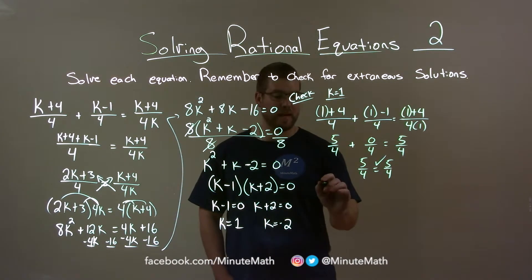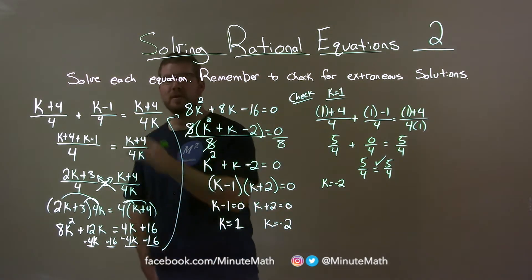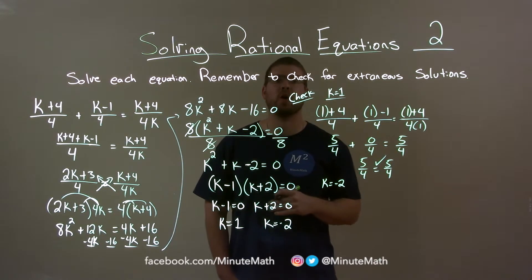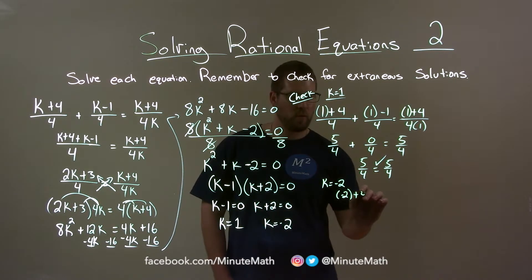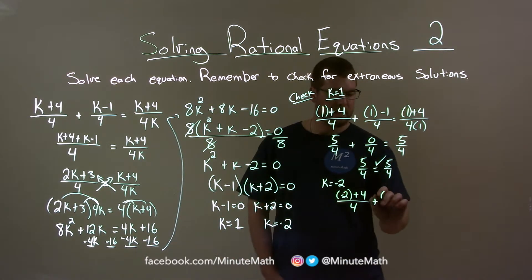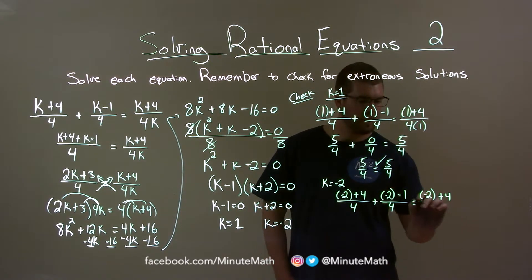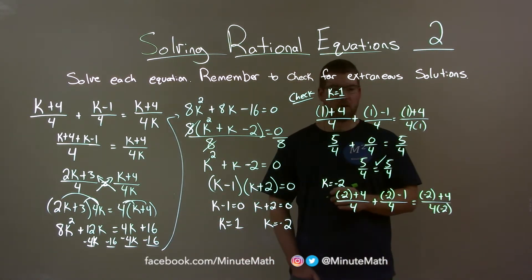Now let's try with k equal to negative 2. k equals negative 2 here. Again, same process. We take our original equation and we substitute negative 2 in for k. And see if the left and right hand side are equal. So negative 2 plus 4 over 4 plus negative 2 minus 1 over 4 equals negative 2 plus 4 over 4 times negative 2. And that should be all the k's.